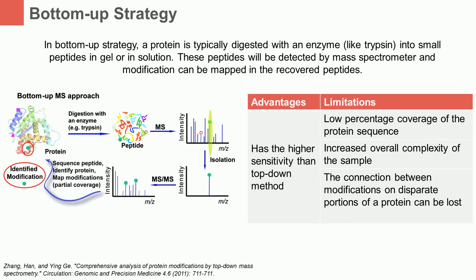However, there are some intrinsic limitations in characterizing protein modifications. The first one is low percentage coverage of the protein sequence, which leads to the modification status of the unrecovered sequence portion remaining unknown. In addition, the overall complexity of the sample is increased due to plentiful small peptide components by protein digestion. Moreover, the connection between modifications on disparate portions of a protein can be lost, because the typical peptides from tryptic digestion contain only from 5 to 20 amino acids.